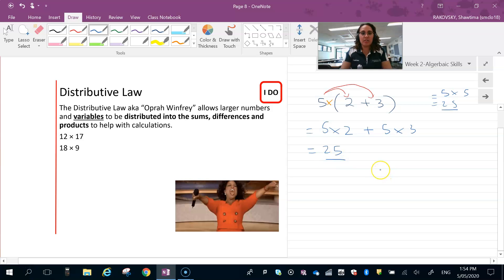We can also use this to distribute across the sums and the differences of values. So if we have a look here at this 12 times 17, that 12 is fine, but if I break that down to 10 plus 7, I could then solve this without having to use a calculator.